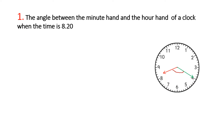In this clock, the minute hand is marked in green and the hour hand is marked in red. This is the angle we need to find — the angle at 8:20, which is the position of the minute hand and hour hand.